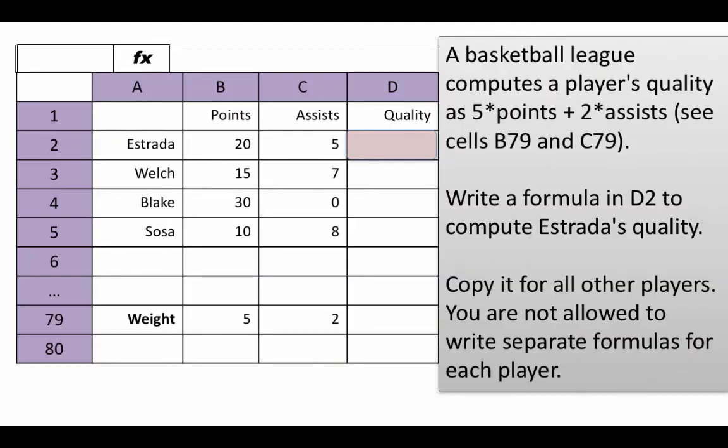So, let's do some examples of isolating assumptions. So, once again, I've shown only five people here, but by this dot, dot, dot, I'm saying you may have, you know, hundreds of players. I'm saying here a basketball league computes a player's quality as five times points plus two times assists, right? So, here you've got each, the player names and then you've got the number of points they scored and the number of assists they performed and you want to now write a formula to calculate their quality. So, it's five times points plus two times assists, right? And I'm calling this five and two as the weight given to points and the weight given to assists, right? So, a player's total quality is this.